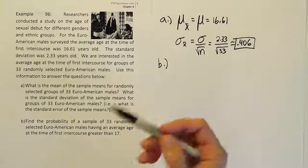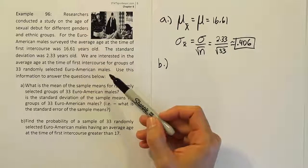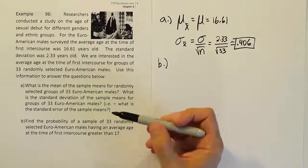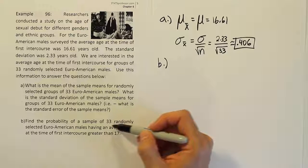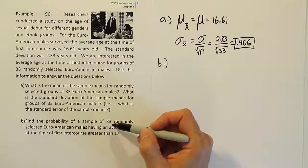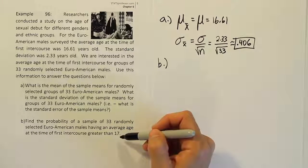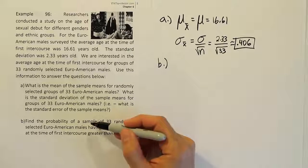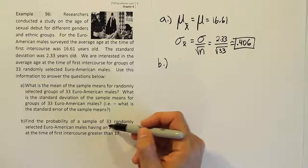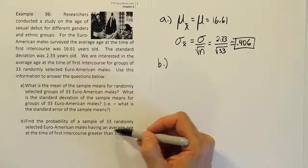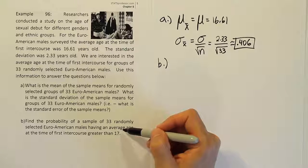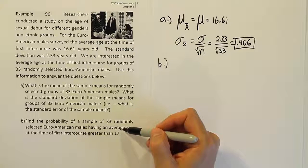It turns out that it doesn't say that the data is normally distributed, but we're able to assume that here because we're taking a sample of size 33. We're not looking for the probability that an individual Euro-American male has had intercourse for the first time at an age greater than 17. That's not what it's asking us. It's looking for the average of a group of 33 randomly selected males. So we're talking about their average. And if we're talking about their average, then we're talking about the distribution of X̄, because that's just a sample of this group.